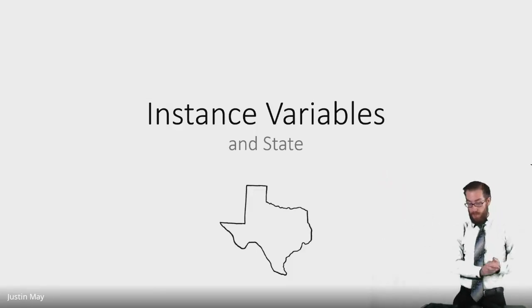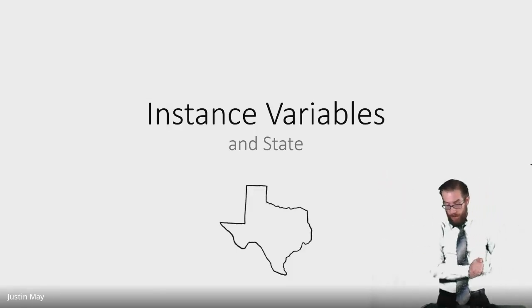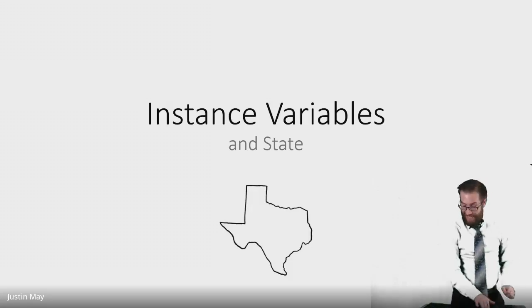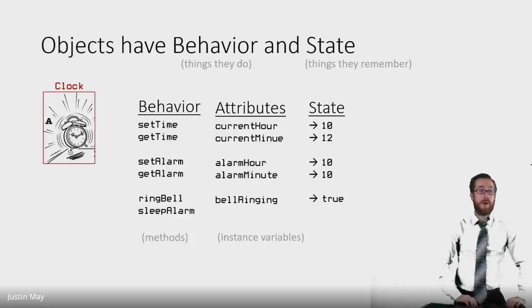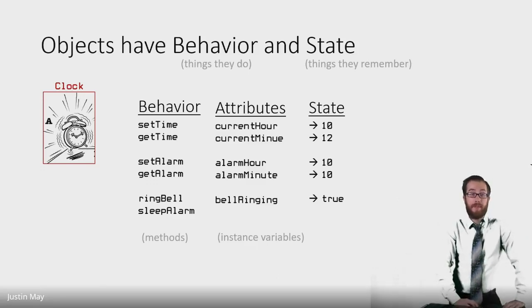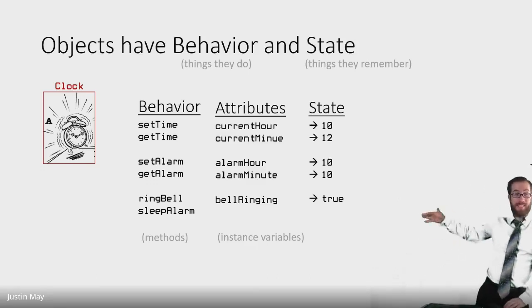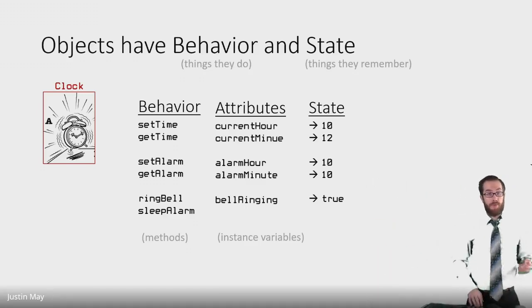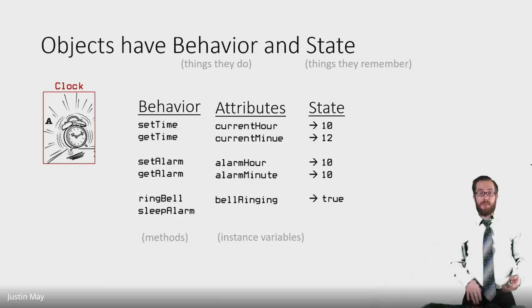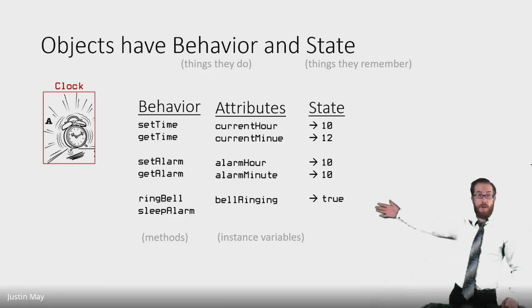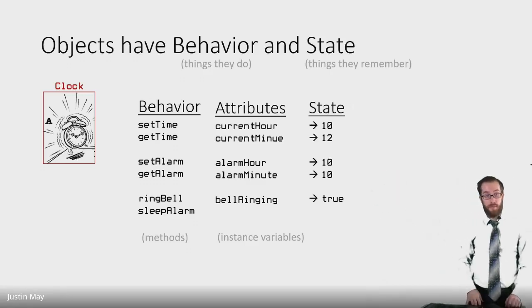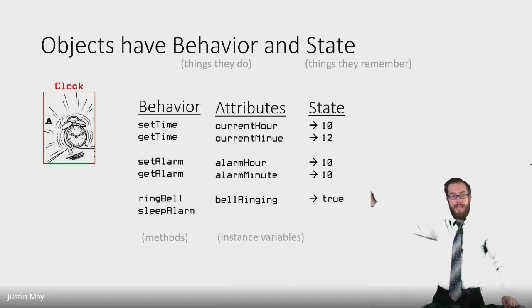In computer science we're talking more about classes today, specifically instance variables and state. Remember, objects have behavior and state. Behavior is the things that the object can do — the methods — and attributes are the things that the object remembers, the things that it knows. These are going to be represented by instance variables, and the state is the values assigned to the attributes.